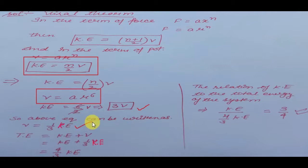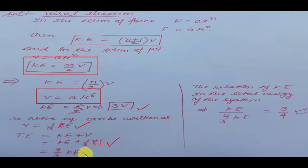Since total energy = kinetic energy + potential energy, substitute potential energy = (1/3) × kinetic energy. This gives total energy = (4/3) × kinetic energy. Therefore the ratio of kinetic energy to total energy is 3/4, which is the correct answer.